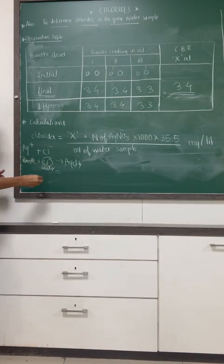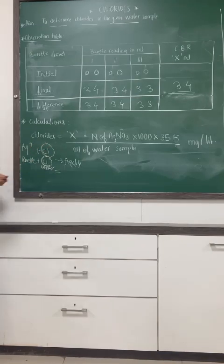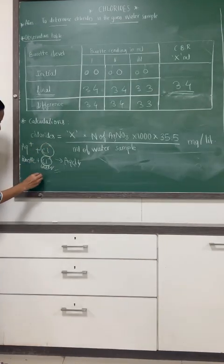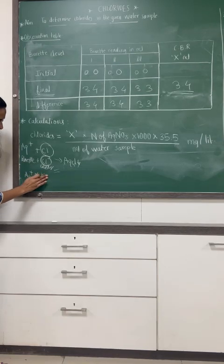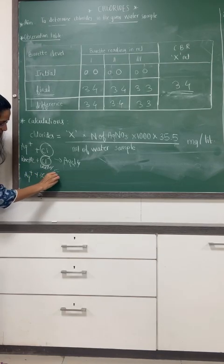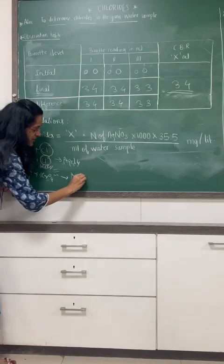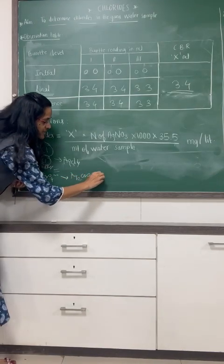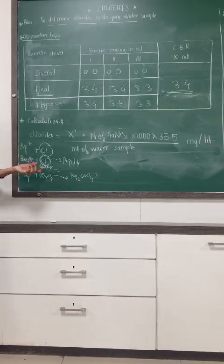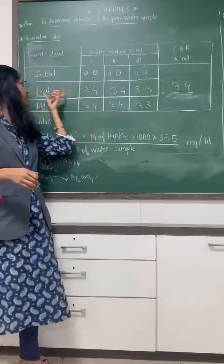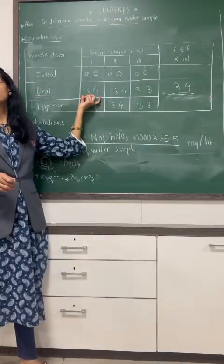This is the precipitation reaction. Then all this Cl minus will be removed. Then this Ag plus is combined with the chromate, CrO4 2-. The chromate ion will form Ag2CrO4 which has the brick red color.